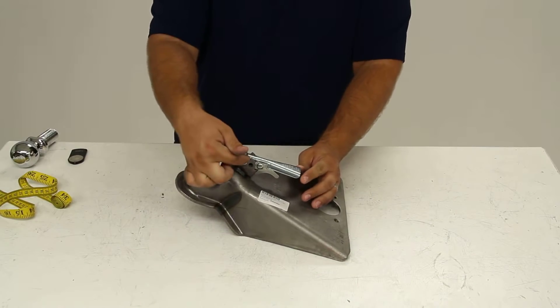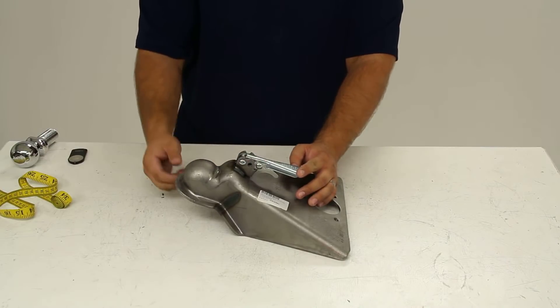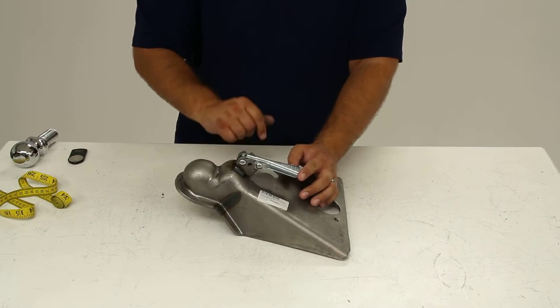Now back up at the latch we'll see there's a hole here that you can use a coupler lock to secure the latch and prevent it from opening while trailering down the road but it'll also prevent theft.